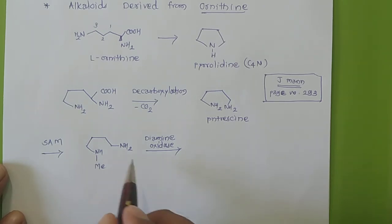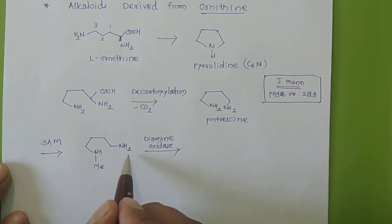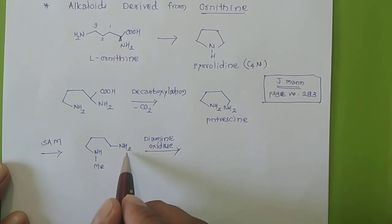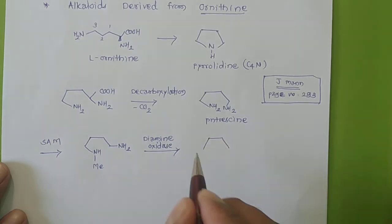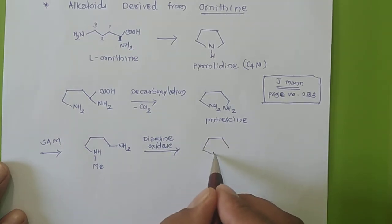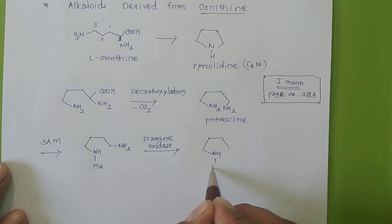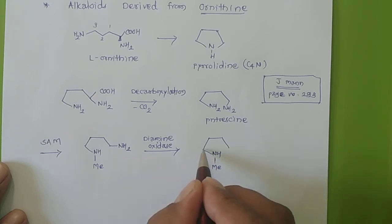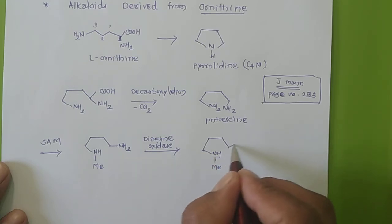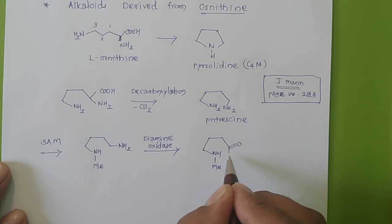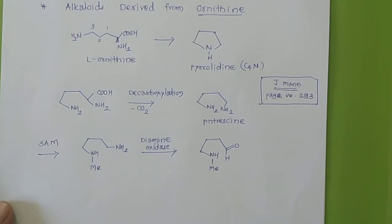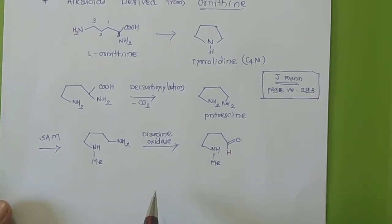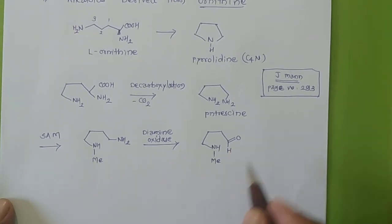Then there will be diamine oxidase — similar to what we did with lysine-type alkaloids. The NH2 group will be oxidized and there will be formation of an aldehyde group. So we have N-methyl and then a CH2 group that becomes an aldehyde, forming a formaldehyde-type group.